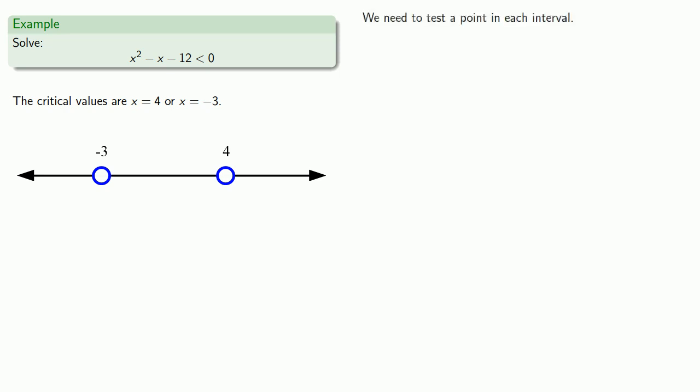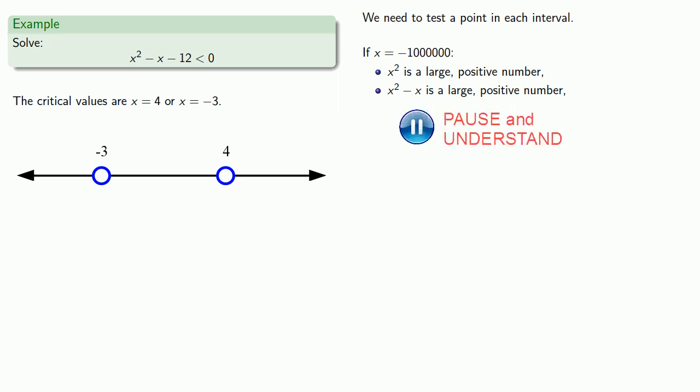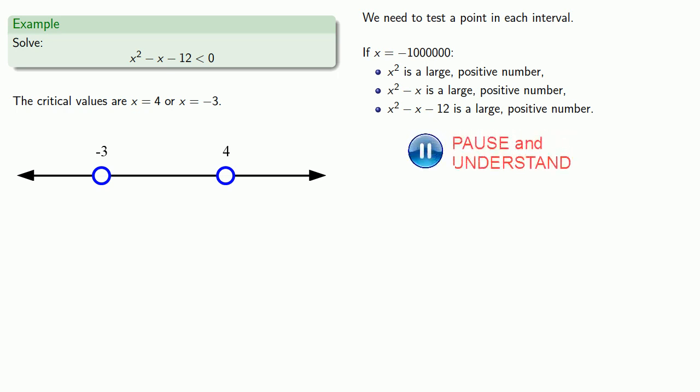In this interval on the left, we might let x equal negative 1 million. And x squared is going to be a large positive number. x squared minus x is going to be a large positive number. And x squared minus x minus 12 is going to be a large positive number. And so this inequality is false. And since it's false, that means we need to exclude this left interval.